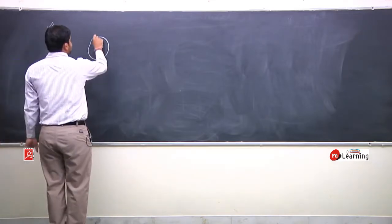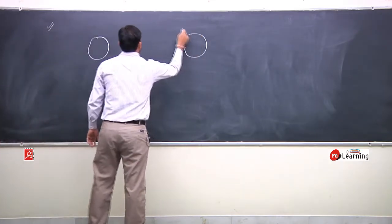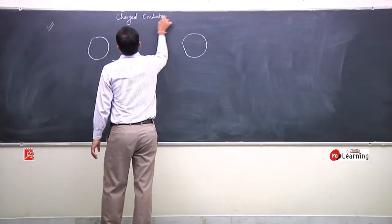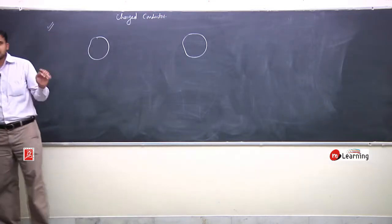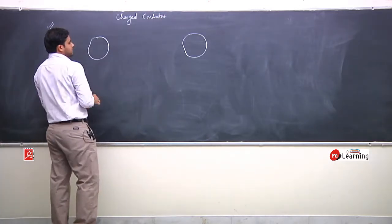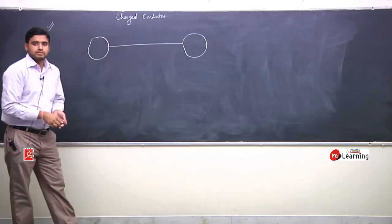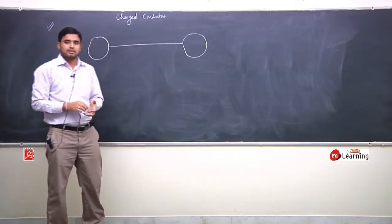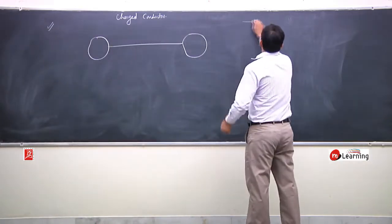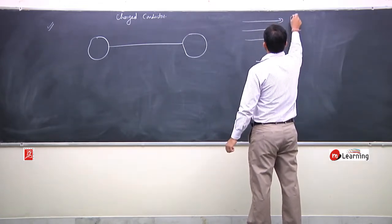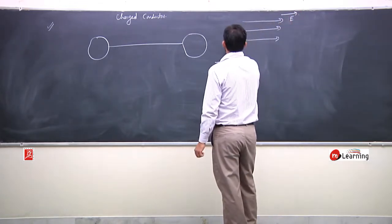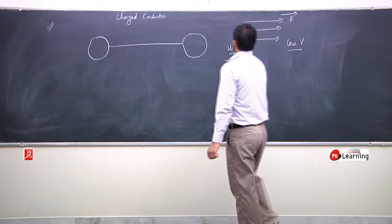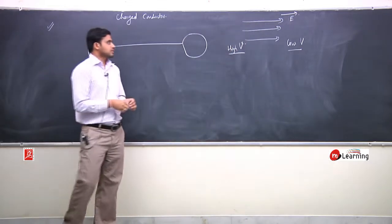Now you can understand one more thing. This is a charged conductor and this is a charged conductor. If you connect them with conducting wire, if you have different potentials, then electric field is set up. Electric field is from high potential to low potential. Field ki direction me potential decreases, right?